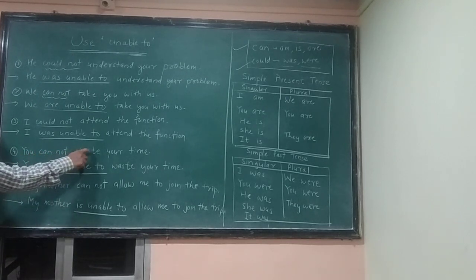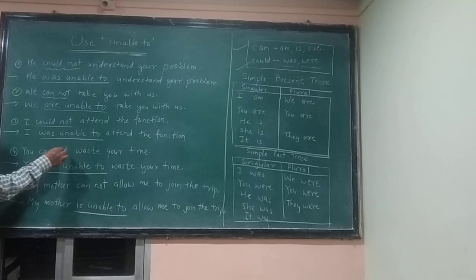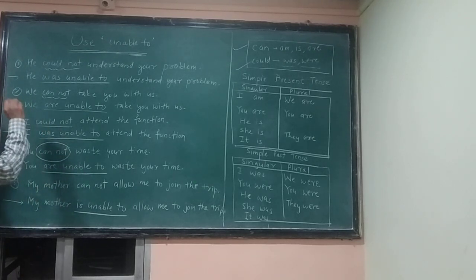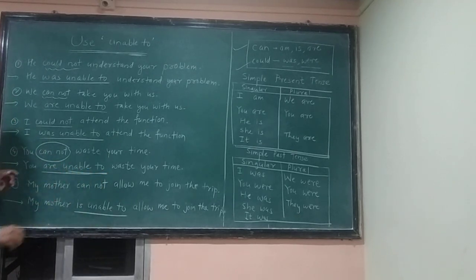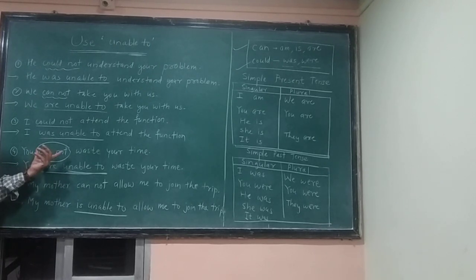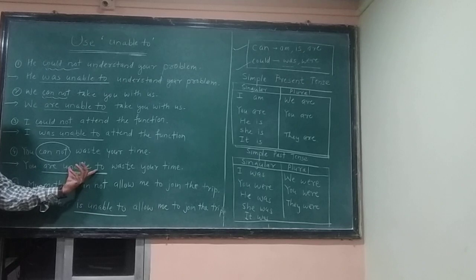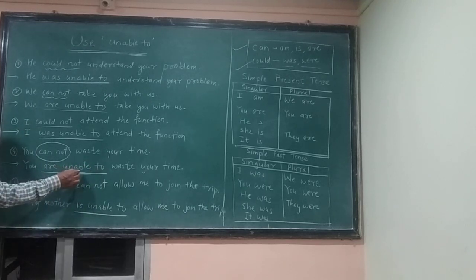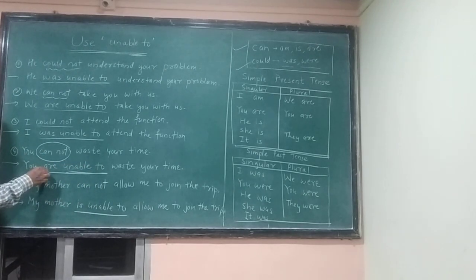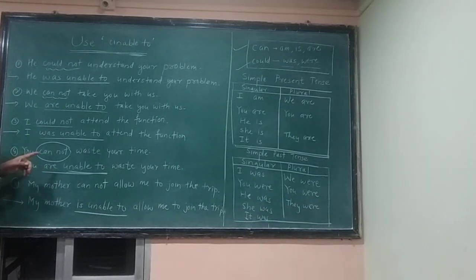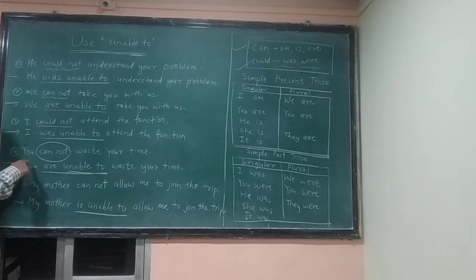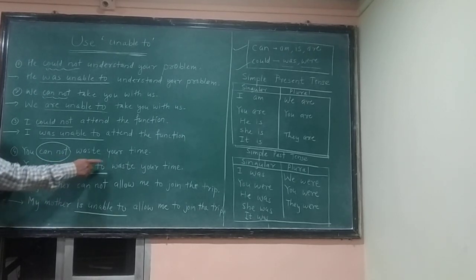The next sentence: 'You cannot waste your time.' We remove 'cannot' and use 'unable to.' Because there is 'can,' we use 'am,' 'is,' or 'are.' The subject is 'you,' so we use 'are.' The sentence becomes: 'You are unable to waste your time.'